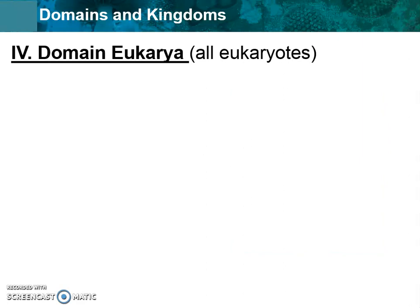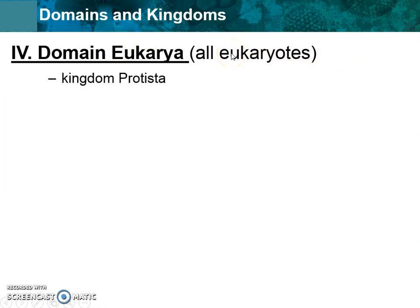The last domain is eukarya. Eukarya sounds a lot like the word eukaryote, and that's because all of the eukaryotes are in this category. Remember, eukaryotic cells have a nucleus. They're super complex and they tend to be our multicellular organisms, though there are some that are single celled. Here are the kingdoms we're talking about, and we'll learn about each kingdom in detail throughout the rest of the unit.